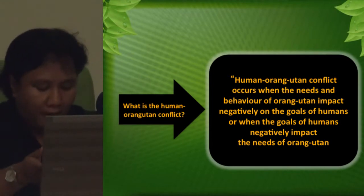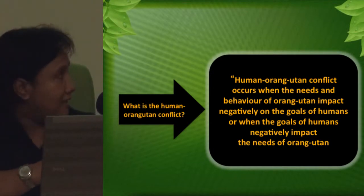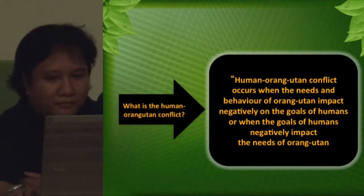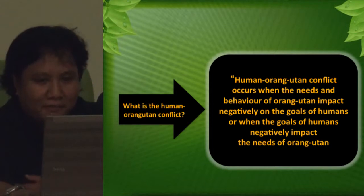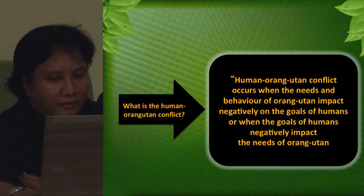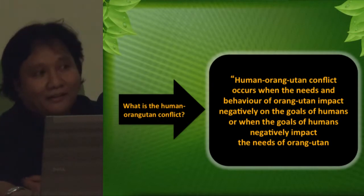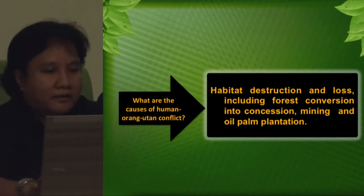I'm going to start with a very basic question. In orangutans, chimpanzees, or gorillas — I'm emphasizing here my experience with the orangutan as the only Asian great apes living in Indonesia. Human-orangutan conflict occurs when the needs and behavior of orangutans negatively impact the goals of humans, or when the goals of humans negatively impact the needs of orangutans.